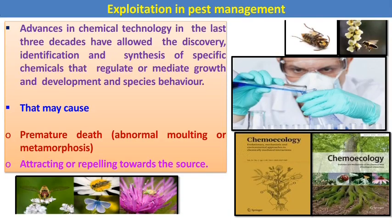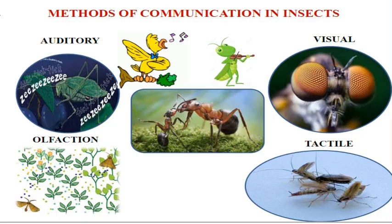Advances in chemical technology over the last three decades have allowed the discovery, identification, and synthesis of specific chemicals that regulate or mediate growth, development, and species behavior. This may cause premature death or attract or repel insects towards or away from a source. Insects communicate with each other by means of auditory organs, visual organs, olfactory receptors, and tactile receptors.